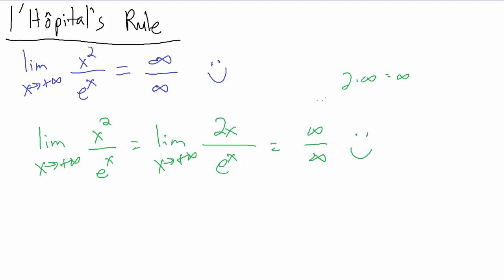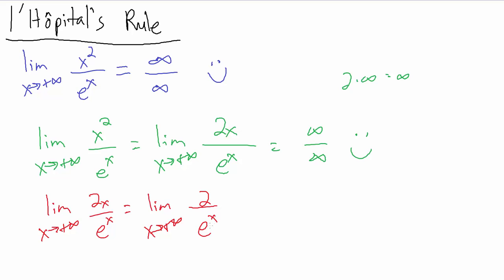So let's try it one more time. Applying L'Hôpital's rule again to the limit as x goes to infinity of 2x divided by e to the x: the derivative of the top, 2x, is just 2. The derivative of e to the x is still e to the x. Now doing direct substitution, on top we just have the constant 2, and on the bottom e to the x goes to infinity — so we have 2 divided by infinity, which we can just write as 0.